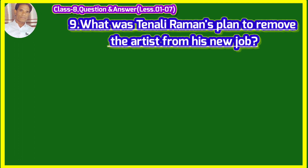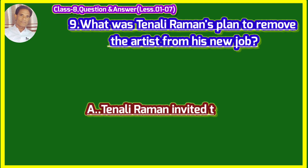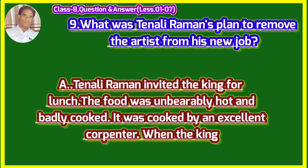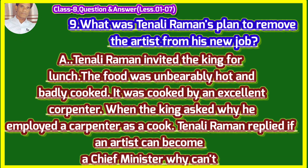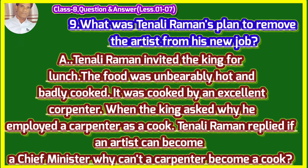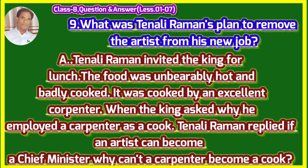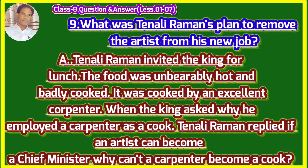What was Tenali Raman's plan to remove the artist from his new job? (Is prakar ko uske nye kari se hatane ke liye Tenali Raman ki kya yojana thi?) Tenali Raman invited the king for lunch. The food was unbearably hot and badly cooked. It was cooked by an excellent carpenter. When the king asked why he employed a carpenter as a cook, Tenali Raman replied: if an artist can become a chief minister, why can't a carpenter become a cook? Tenali Raman ne raja ko bhojan par bulaya. Bhojan tikha wa aswadisht bana tha. Yeh ek ache badhai dwara banaya gaya tha. Jab raja ne pucha, usne ek ache badhai ko raswaiye ki rupi kio niyukti kiya. Tenali Raman ne uttar diya.